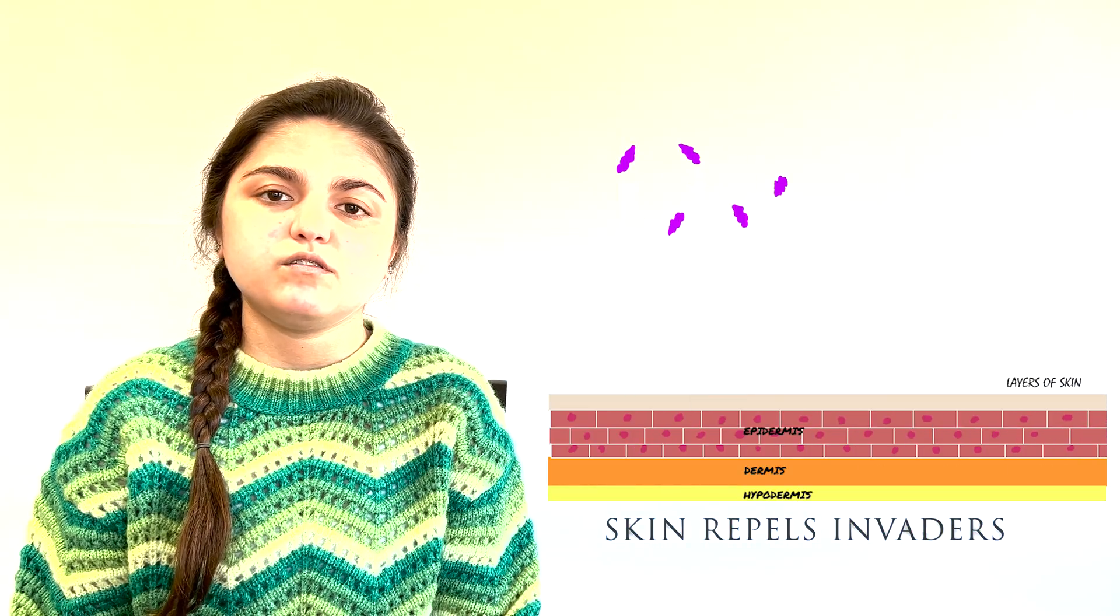For example, the skin and the lining of the digestive, respiratory, and genital urinary systems. These surfaces provide a physical barrier.